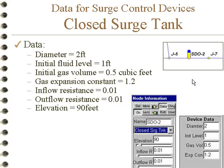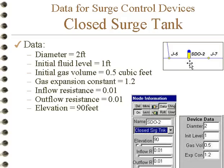We'll start with a closed surge tank. A closed surge tank has a space with a gas in it, and as with all surge control devices, we have to have exactly two connections to do our surge model. As shown here, this is the data that's required.